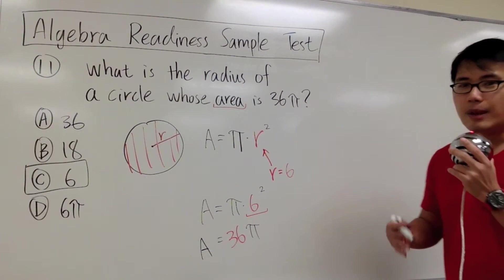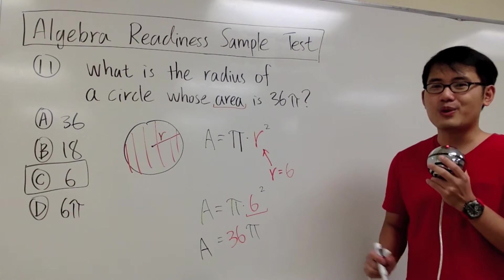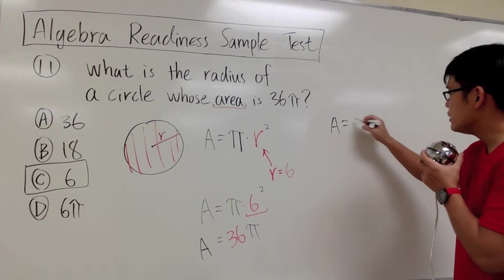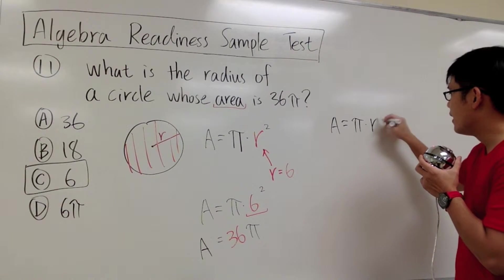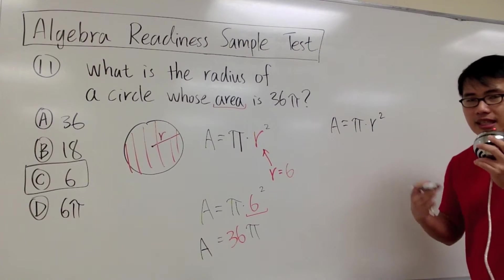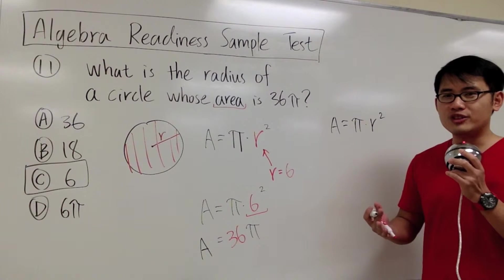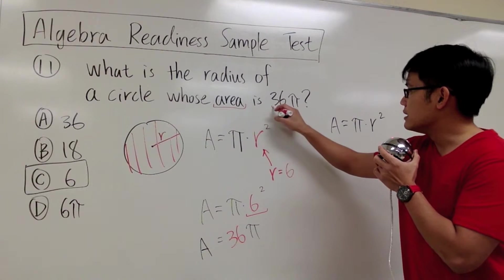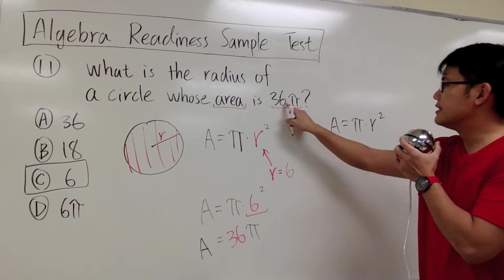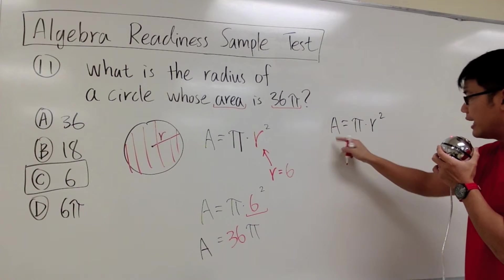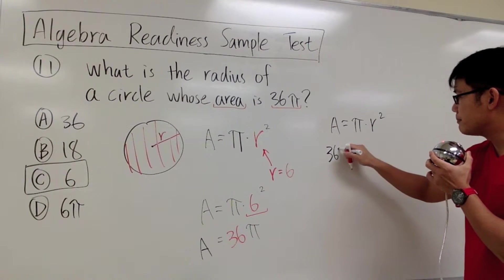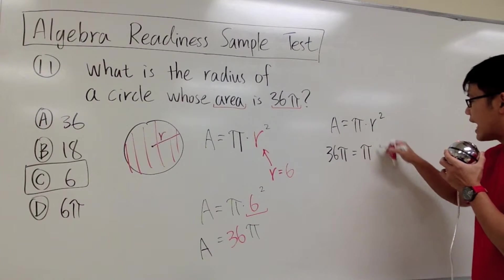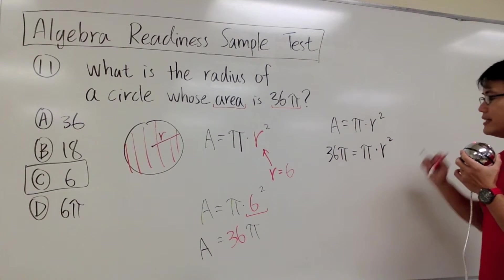But then I would also like to show you guys the more algebra way to solve this question. Once again, I'll begin by writing down the formula, A = πr². And this is a typical way of solving an equation in an algebra course. We know the area is equal to 36π. So I'm going to put 36π for A, and we will have 36π, and that will be π times r².